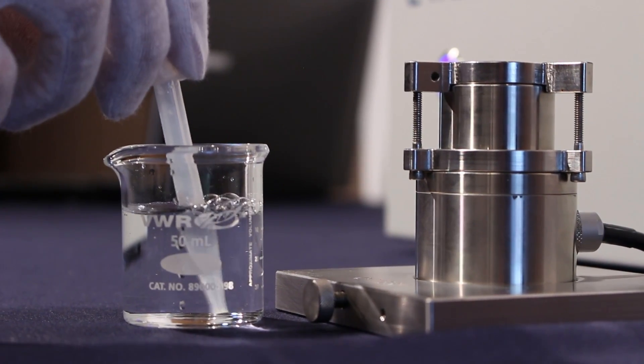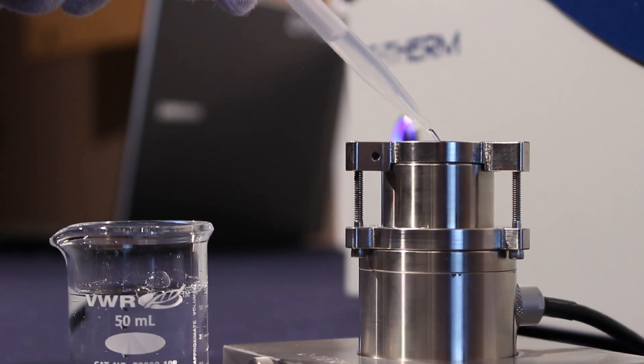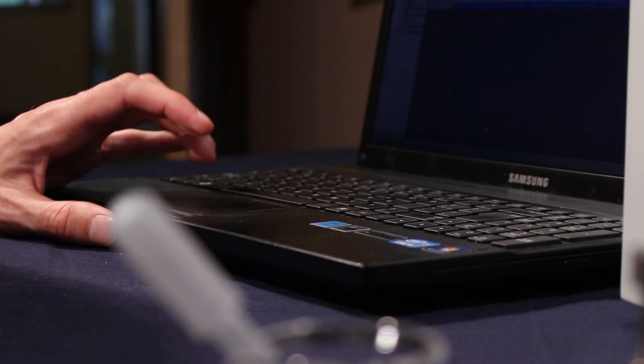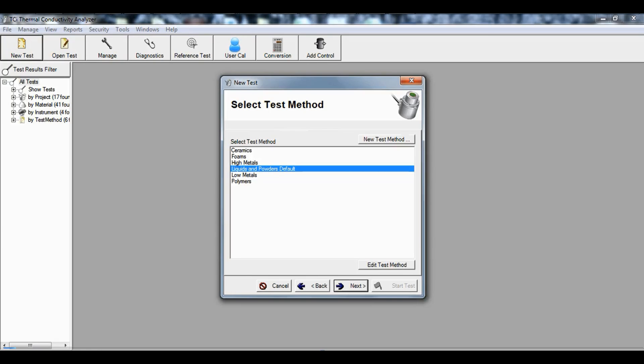In taking a measurement all we have to do is fill this small volume test kit with an effective amount of material and choose the liquids calibration from the software.